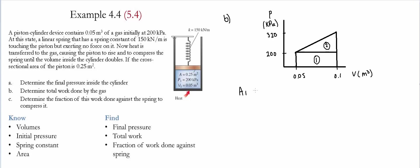For Area 1, since it is a rectangle, it is simply height times width. The height is 200 kilopascals and the width is 0.05 meter cubed, giving an area of 10 kilojoules. The units work out as kilonewtons per meter squared times meter cubed, which simplifies to kilonewton-meters, or kilojoules — the unit of work.